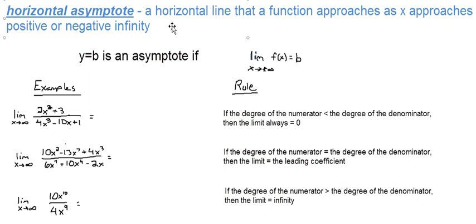You see this when functions level out as you move from the left or to the right. They level out into a horizontal line that can be anywhere. One way to think of it is y equals b, some value b, could be an asymptote if the limit of a function as x approaches positive or negative infinity equals b. So if you see that with limits, you know you have a horizontal asymptote.